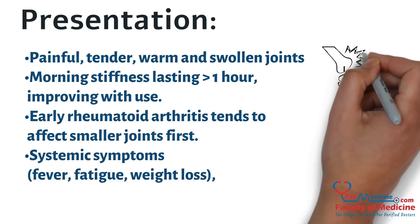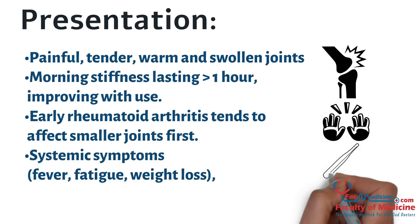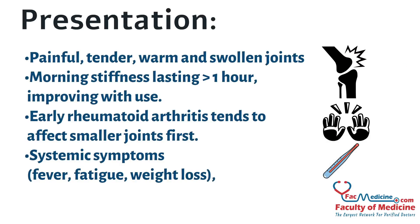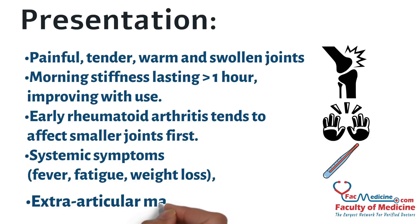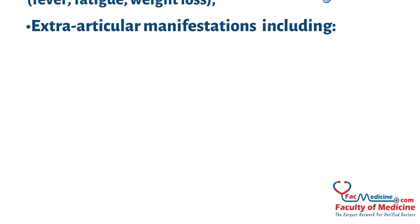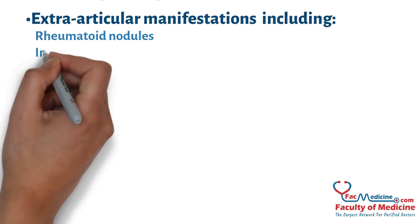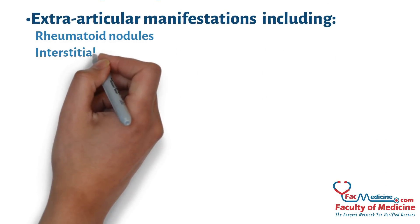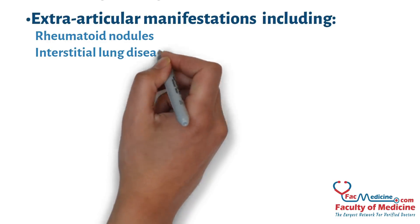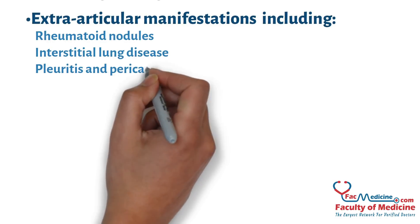Systemic symptoms include fever, fatigue, and weight loss. Extra-articular manifestations include rheumatoid nodules, interstitial lung disease, pleuritis, and pericarditis.